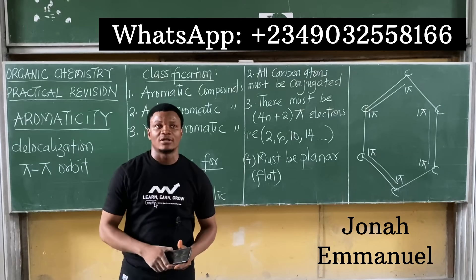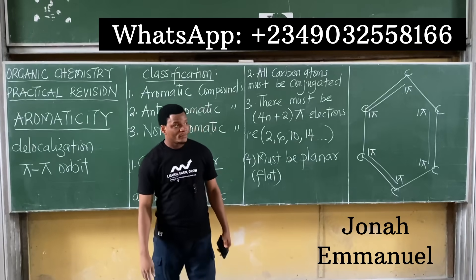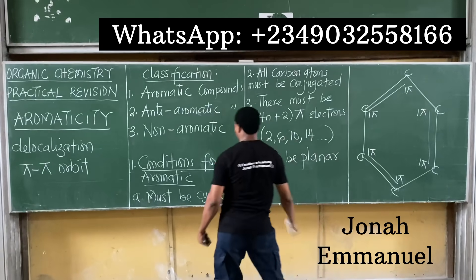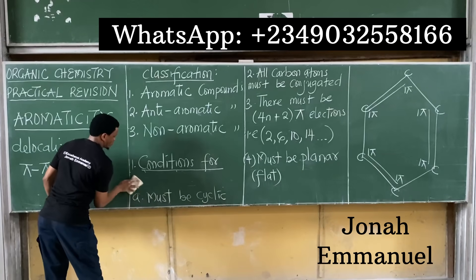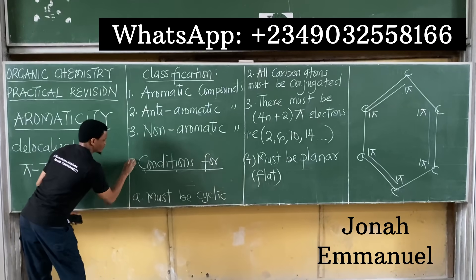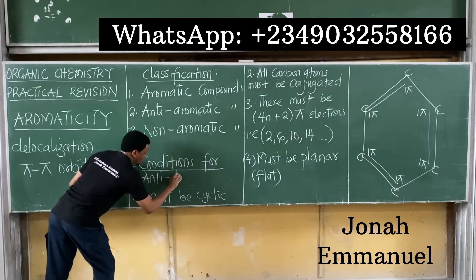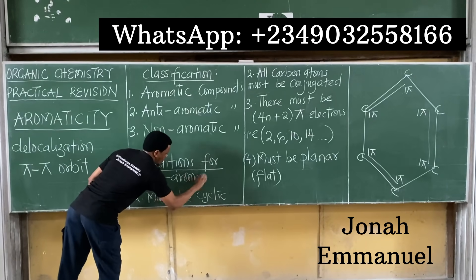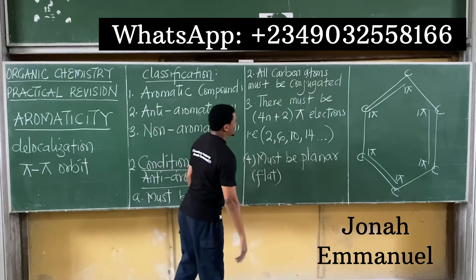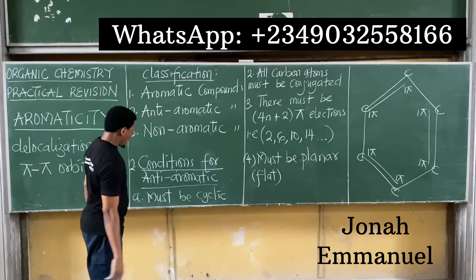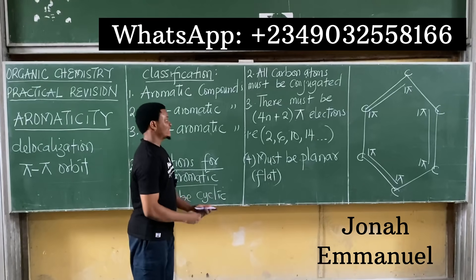Now let's look at anti-aromatic compounds. The conditions for anti-aromatic are similar. Number one: it must be cyclic. Number two: all atoms must be conjugated. Those are the same as aromatic.